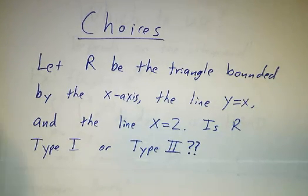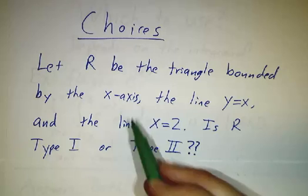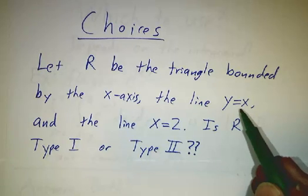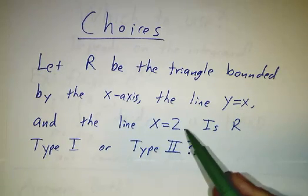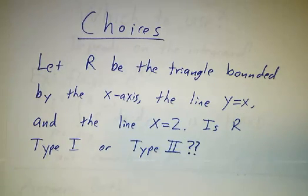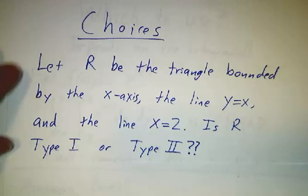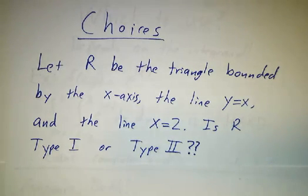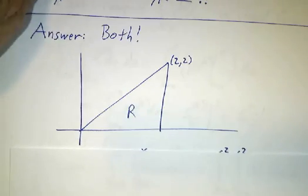So let's suppose we're talking about a triangle bounded by the x-axis, y equals x, and x equals 2. That's a triangle — three sides. Is it Type 1 or Type 2? Well, the fact is it's both.